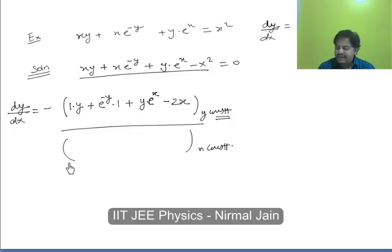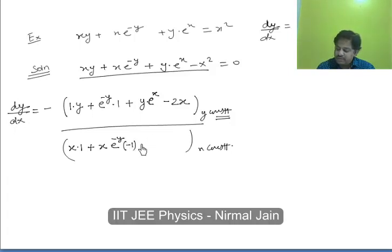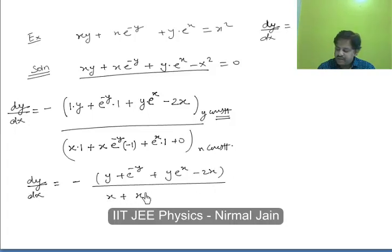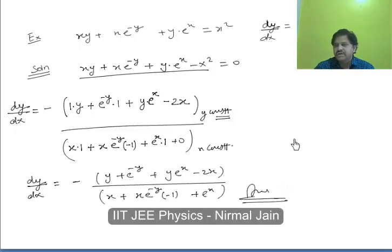In the denominator, keep x as constant: x comes as it is, differentiation of y is 1, plus x is constant and e to the power x differentiates, but by chain rule minus y gets differentiated to minus 1, plus e to the power x is constant and y gets differentiated to 1, and x squared's differentiation will be simply 0. So dy/dx equals y plus e to the power x plus y e to the power x minus 2x, upon x plus x e to the power minus y minus 1 plus e to the power x. That is the final answer.